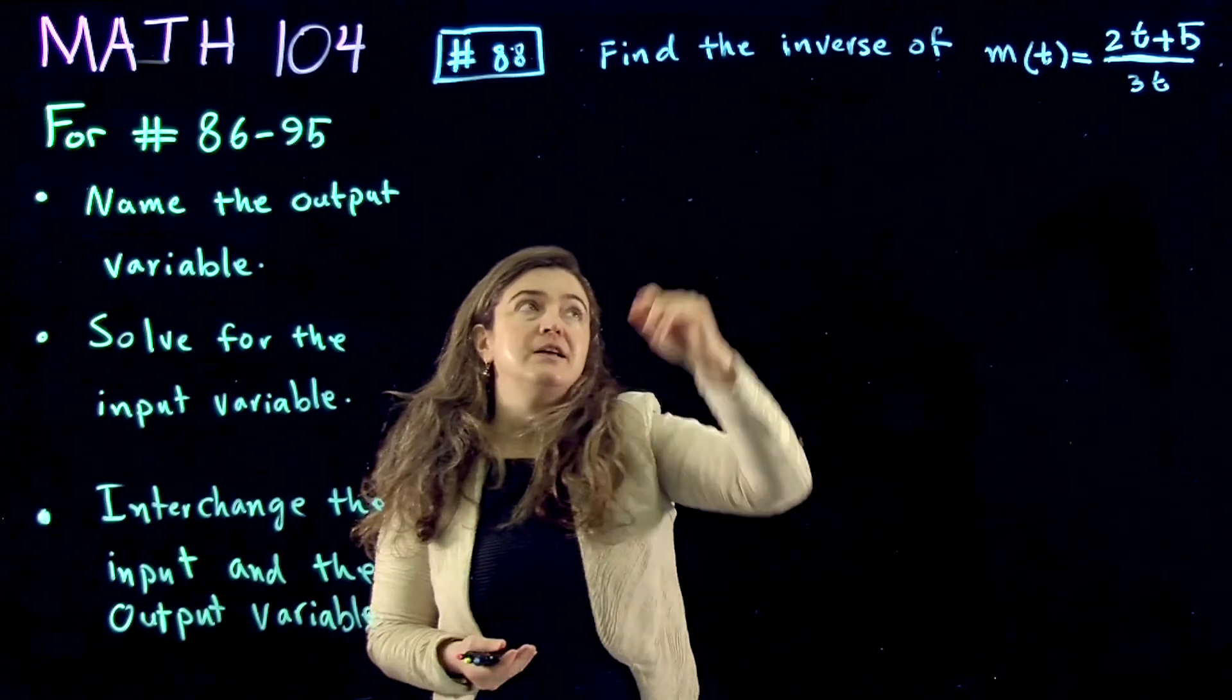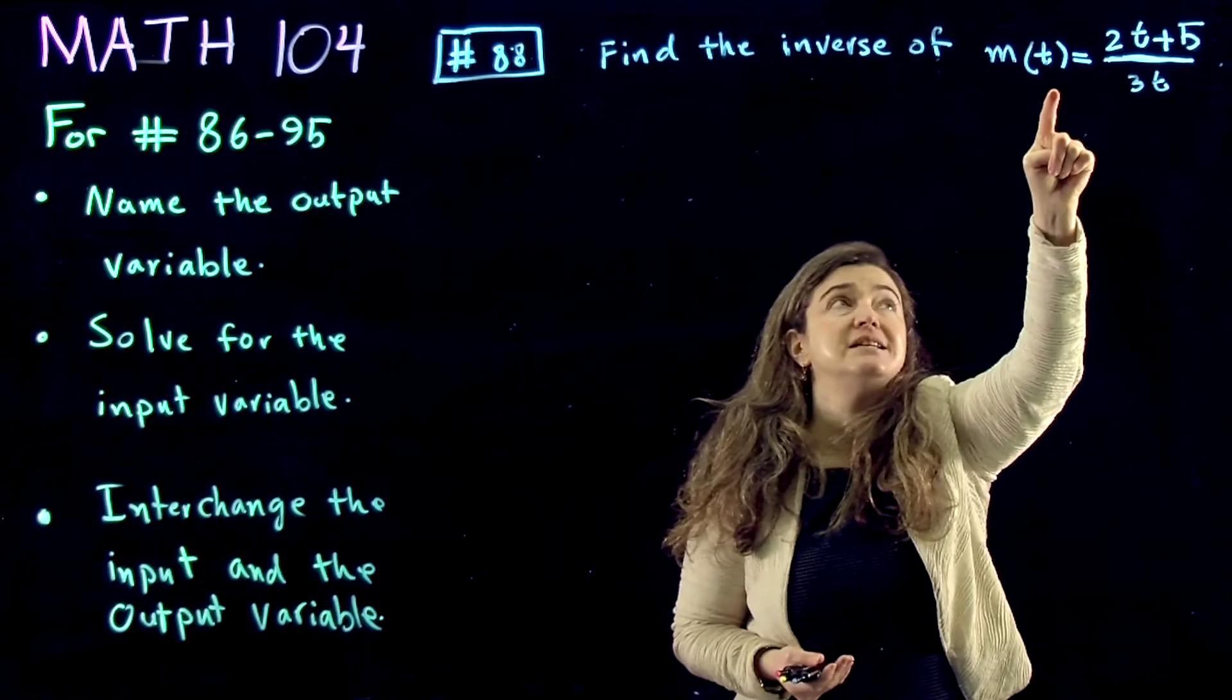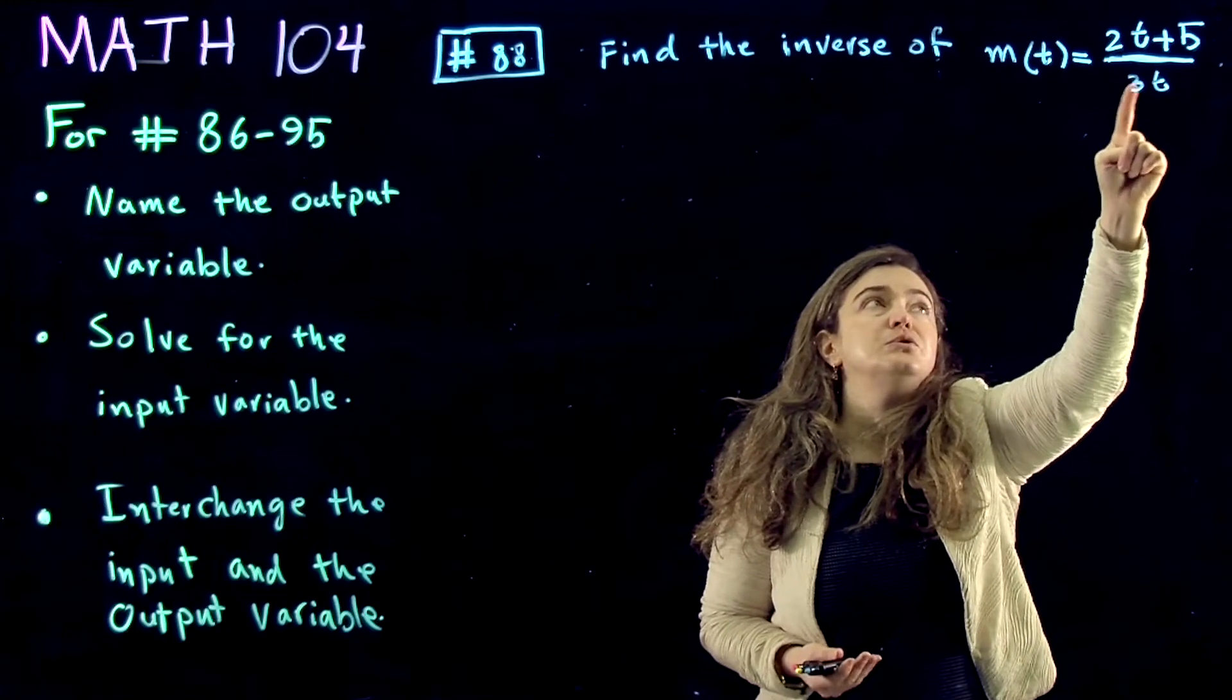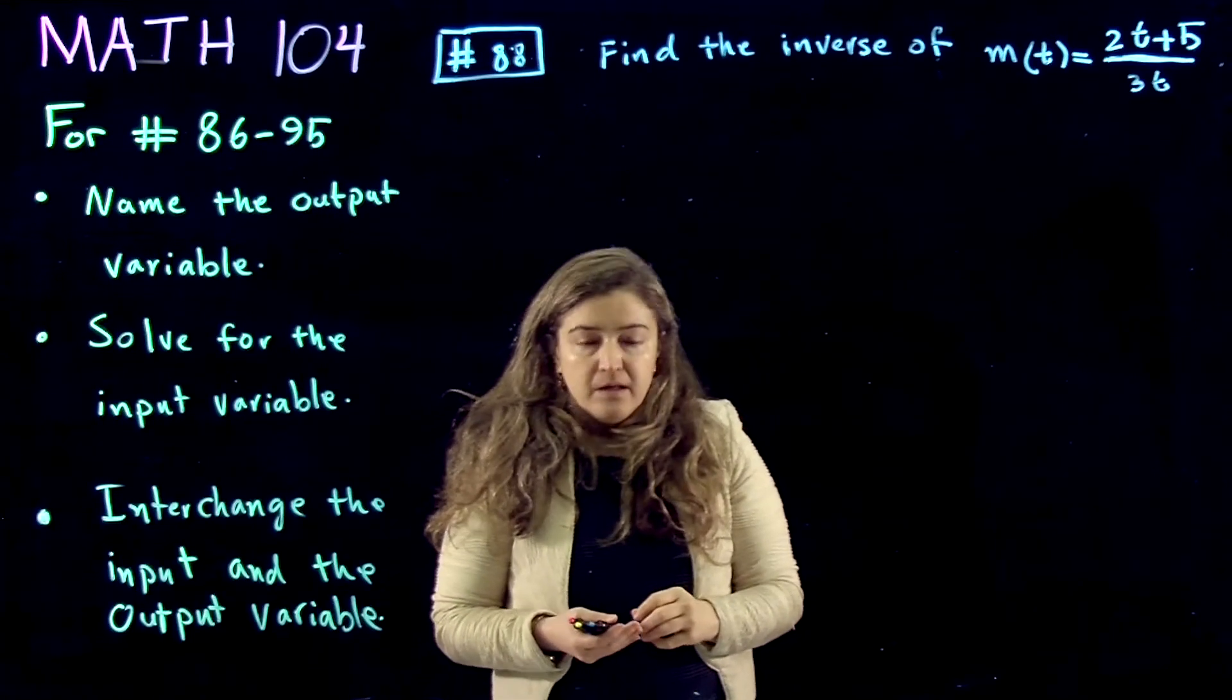These are finding the inverse of a function, and the function in this one is m of t is equal to 2t plus 5 divided by 3t.